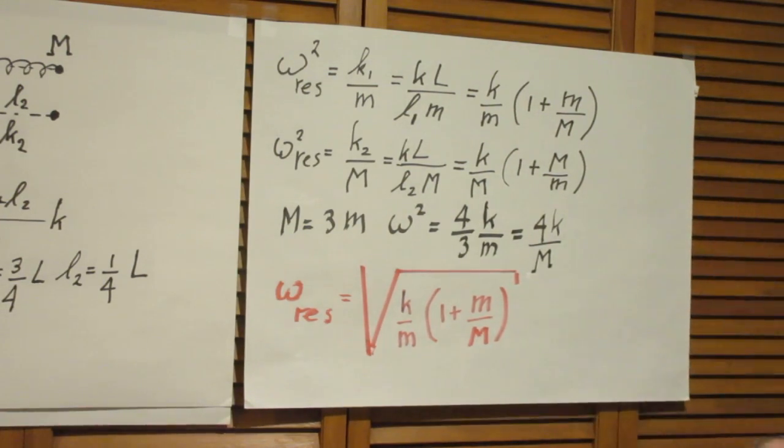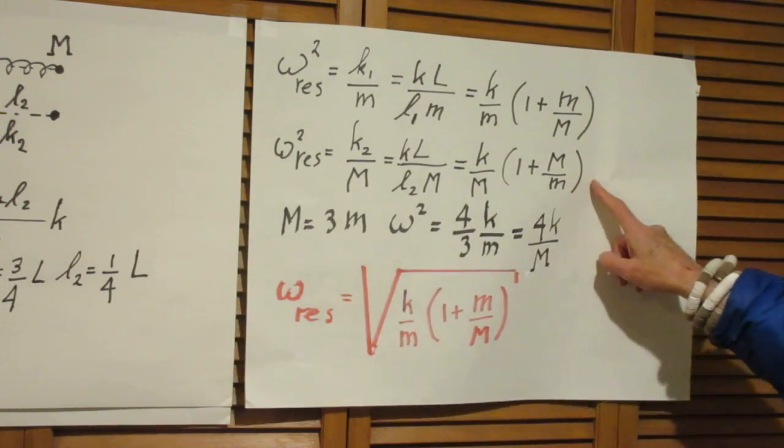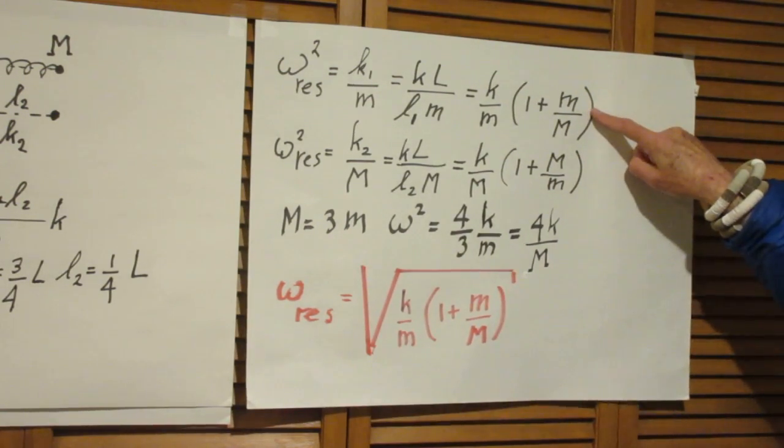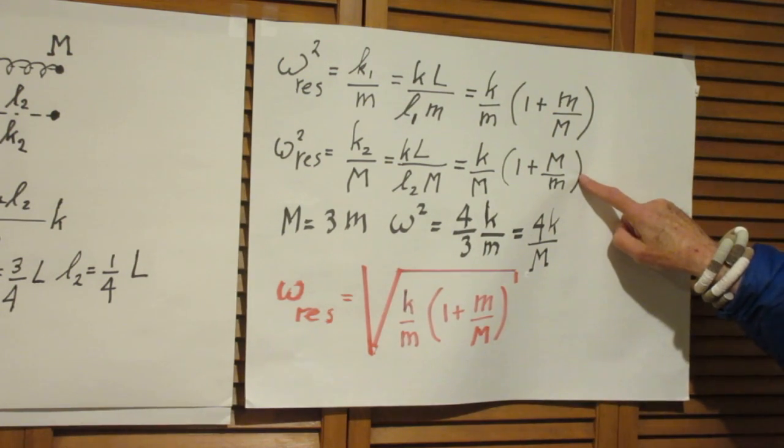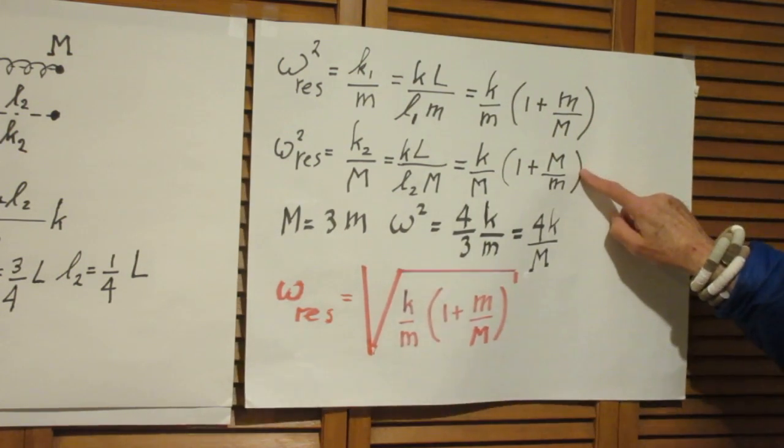And the resonance frequency squared of spring number 2 is obviously the same. It is K2 over capital M and that gives you the same answer. This answer is equivalent to this answer. If you need some time for that, check it.